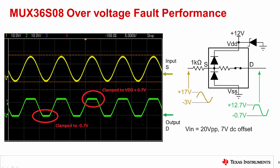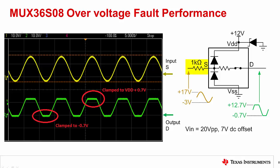This slide shows measured results for the multiplexer with the current-limiting input resistor protection scheme. The circuit is configured in a single supply configuration with VDD equals 12 volts and VSS equals ground. The input signal is a sinusoidal 20 volt peak-to-peak signal offset by 7 volts, ranging from negative 3 volts to positive 17 volts. This input range turns on the ESD diodes on both the positive and negative peak. The 1k ohm input resistor limits the input current to a safe level, and the output voltage clips at 0.7 volts above and below the supply voltages.